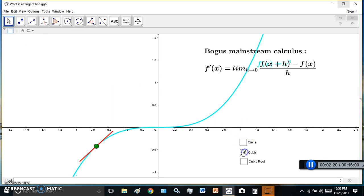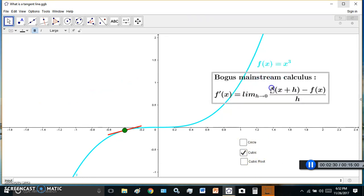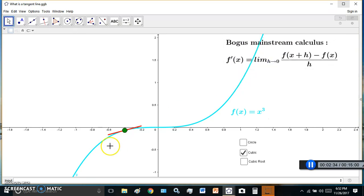For example, if you look at the cubic in the new calculus, you can actually have the general derivative, which is just 3x squared. But it doesn't mean that there is actually a tangent line there, because there isn't. Tangent lines cannot cross the curve.